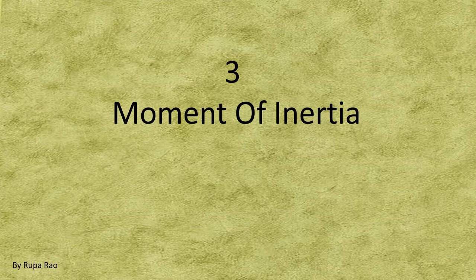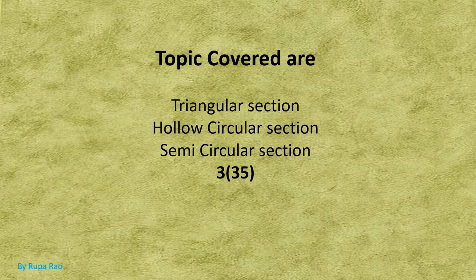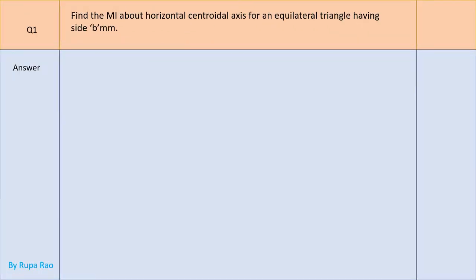This is the third video on moment of inertia. In this video, the topics covered are triangular section, hollow circular section, and semicircular section. Let us see the first problem: find the moment of inertia about the horizontal centroidal axis for an equilateral triangle having side B mm.